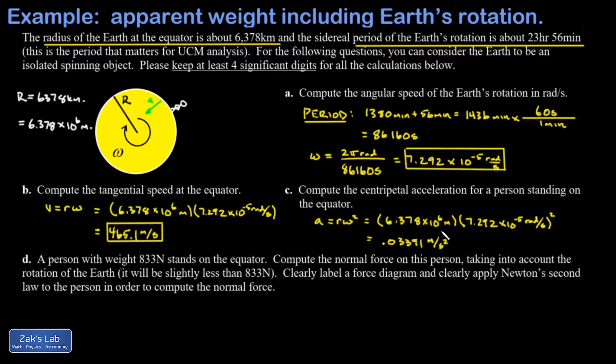Finally in part D, I get to the real meat of the question. I'm told that I have a person with a weight of 833 newtons—that means mg is 833 newtons—and they're standing on the equator, and I want to compute the normal force on this person. If the Earth wasn't rotating, N would just be equal to mg. The whole point of this question is that N is a little bit smaller than mg because of the rotation of the Earth.